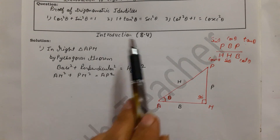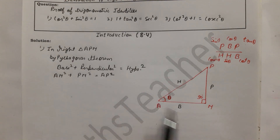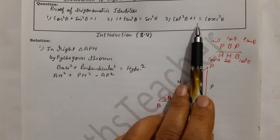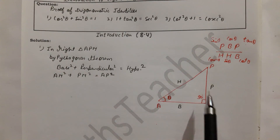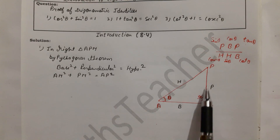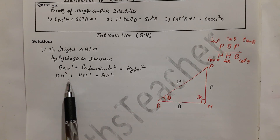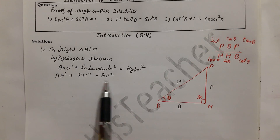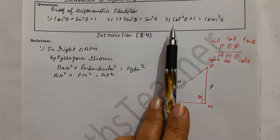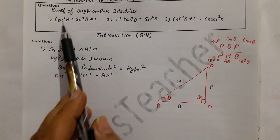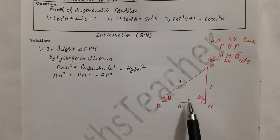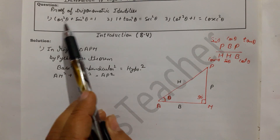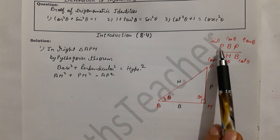Dividing from each of the three sides gives one identity each. First, dividing by hypotenuse² (AP²) gives the first identity. Second, dividing by base² (AM²) gives the second. Third, dividing by perpendicular² (PM²) gives the third. We start by dividing the Pythagoras equation by AP².